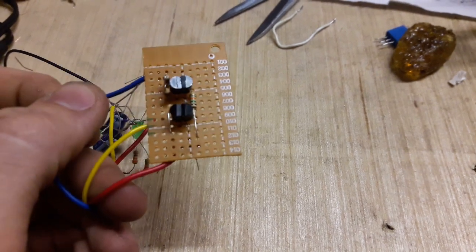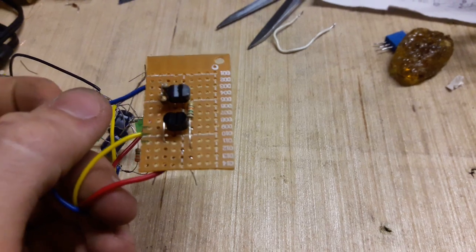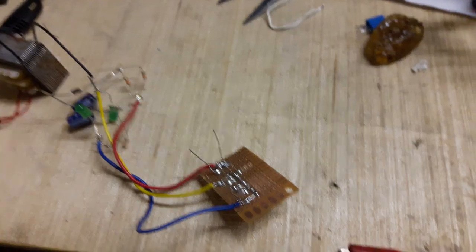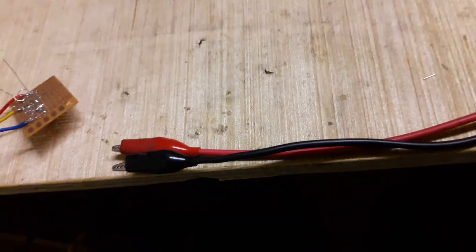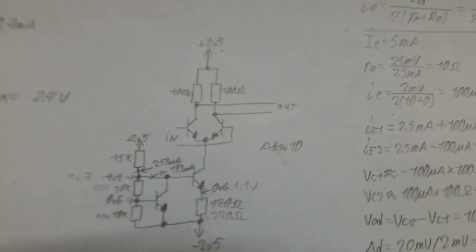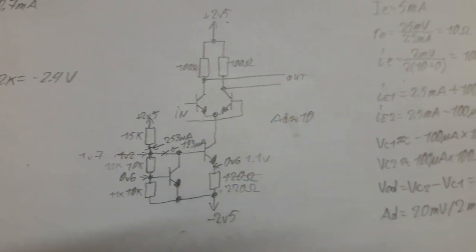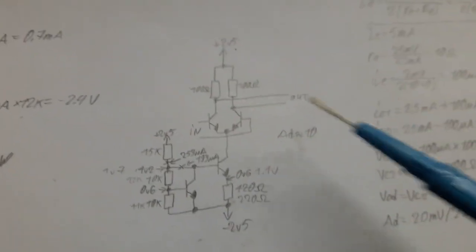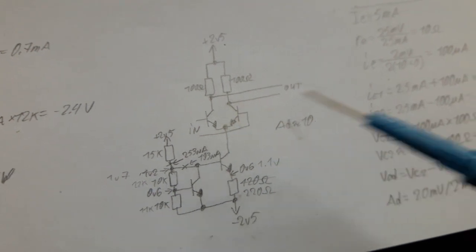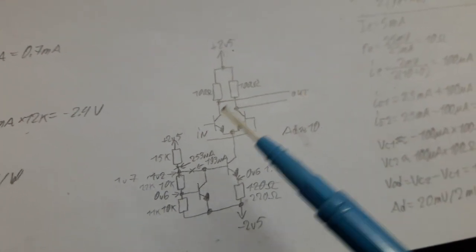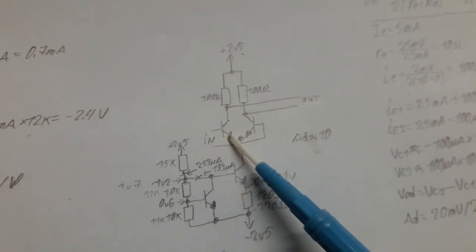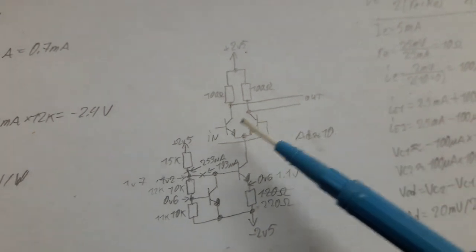The schematic looks like this: two NPN transistors matched. The things that you have to match with these, which is very easy to match actually if you have enough transistors, is the VBE base-emitter junction voltage. If that is gonna be equal, this thing should perform quite good.